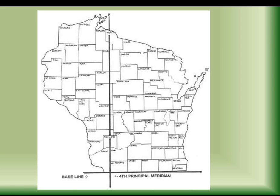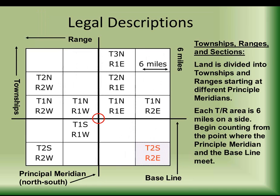The way we describe where you are in the state also uses the word 'township,' along with ranges and sections. It's all based on your distance from the initial point of survey, where the baseline and the principal meridian meet. Your land's location is described based on its distance from this initial point of survey. Say you own land in this township right here — you describe the land by its distance from the initial point of survey.